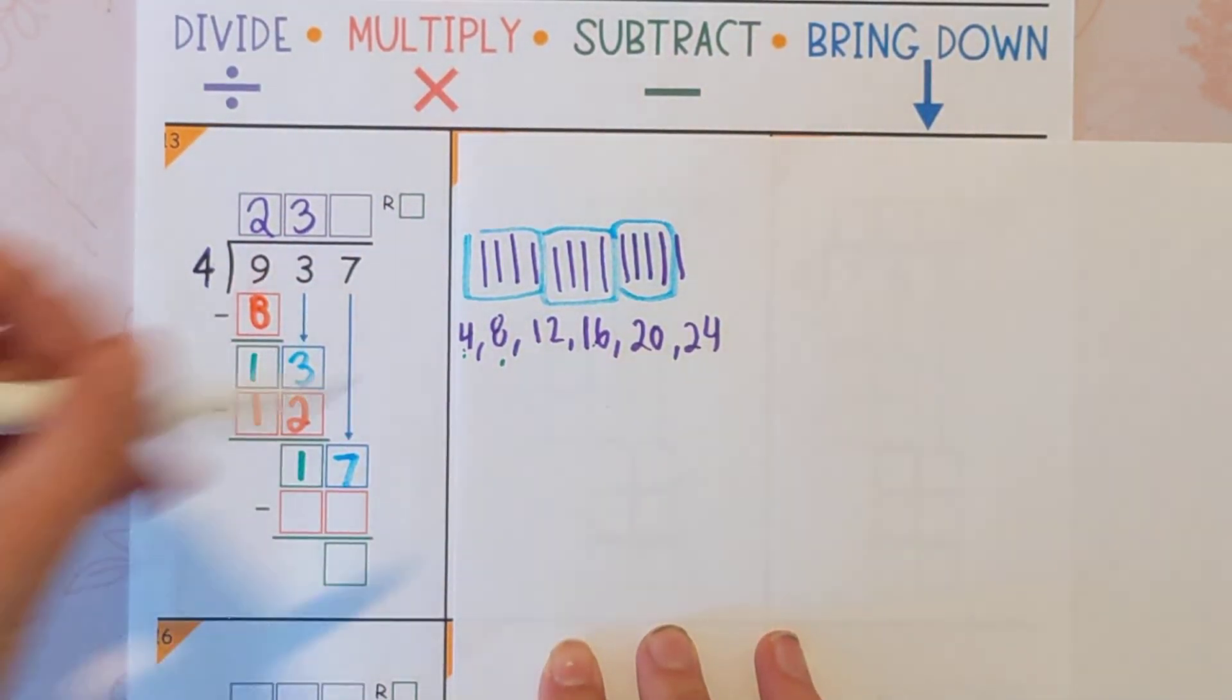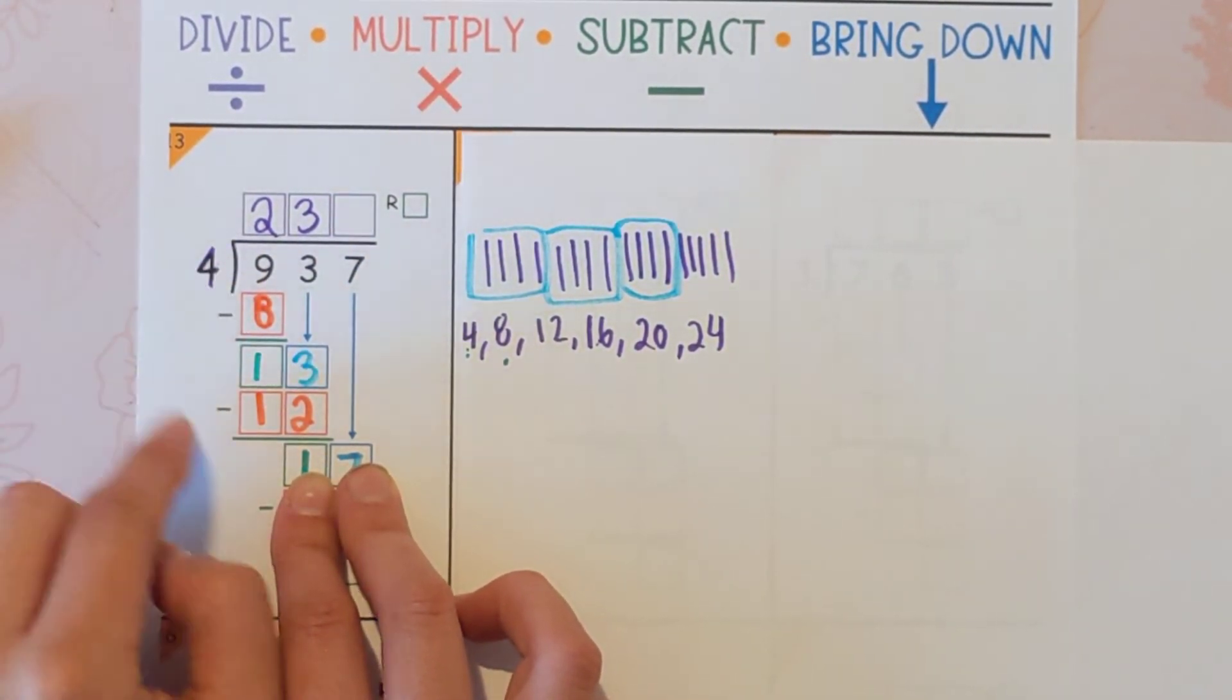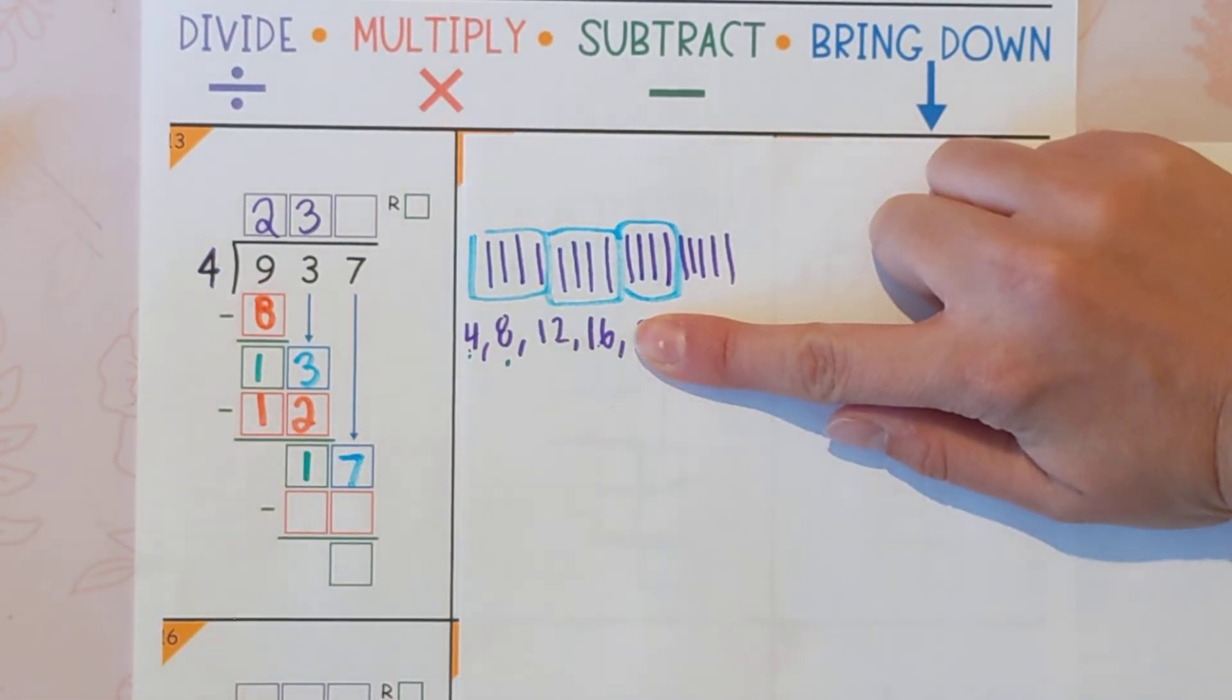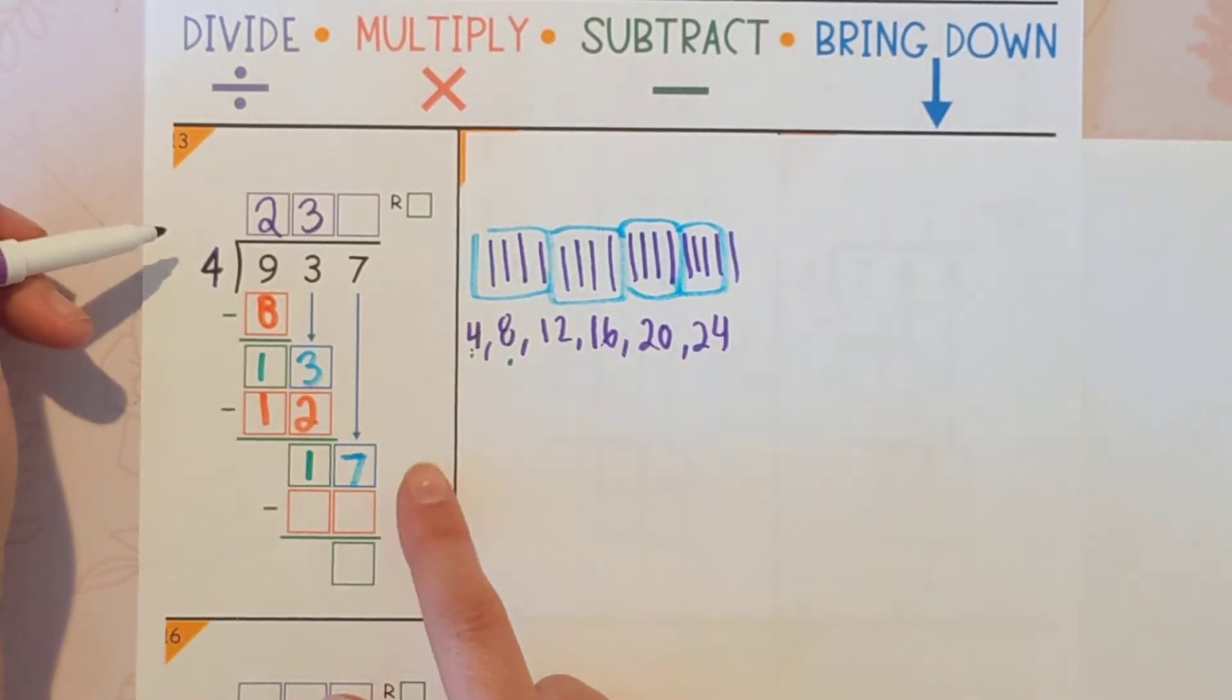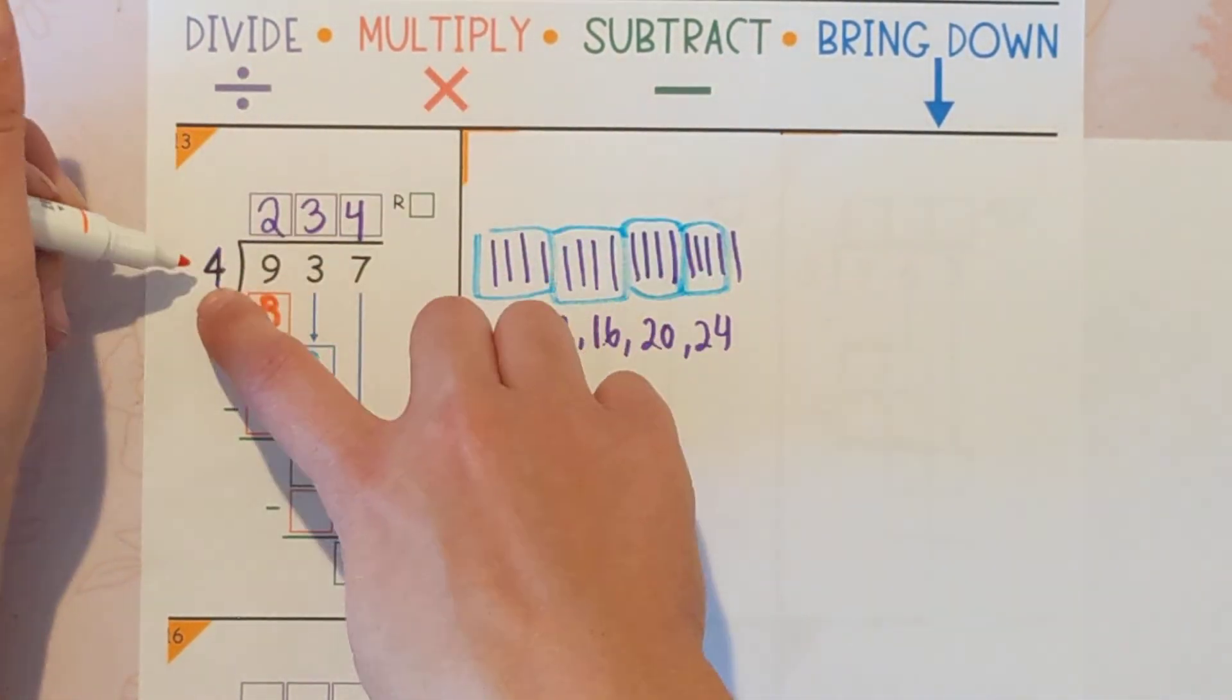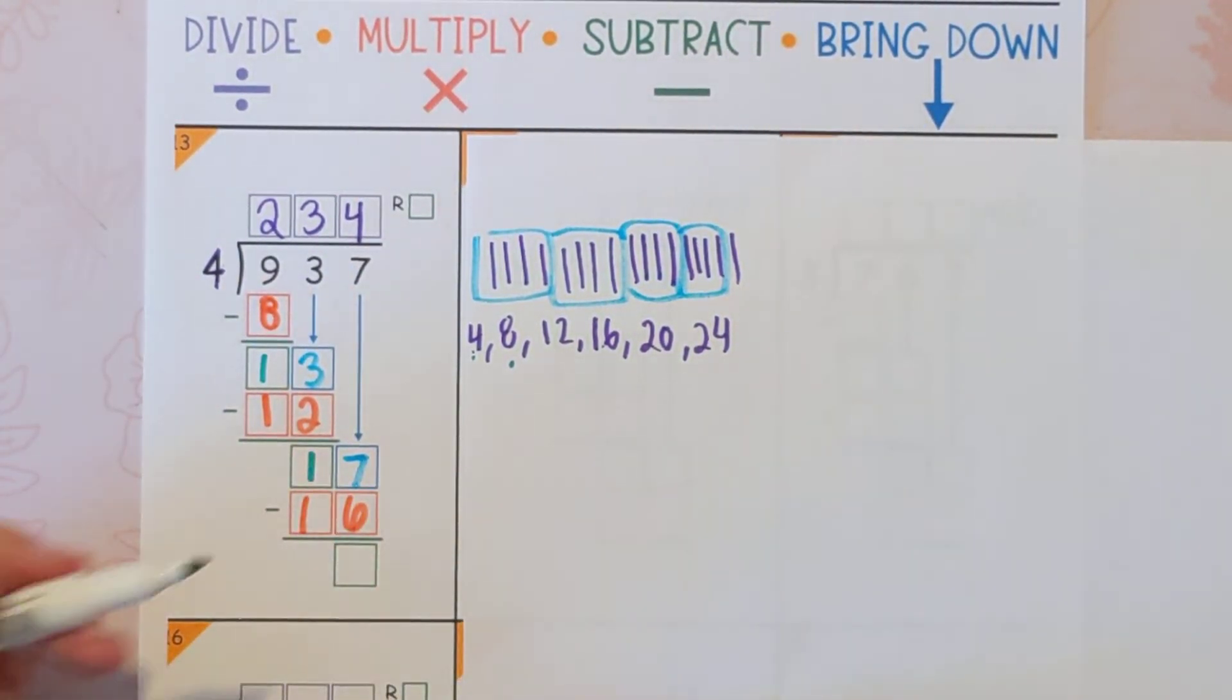Coming back here, so we're going to divide again. 17 divided by 4, or how many times can 4 go into 17, or how many times can you skip count 4 before you go over? And in this case, the answer is 4. So we can fit 4 into 17 four times. And then we multiply it back. 4 times 4 is 16. And then we subtract to see what's left over. So 17 minus 16 is 1.